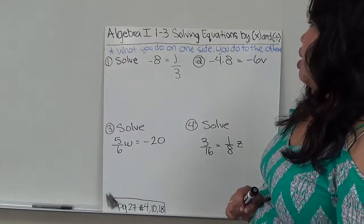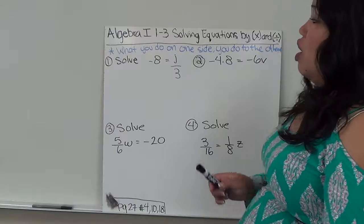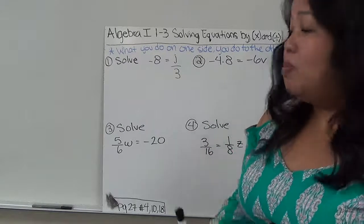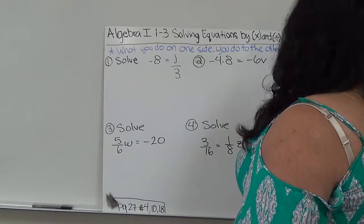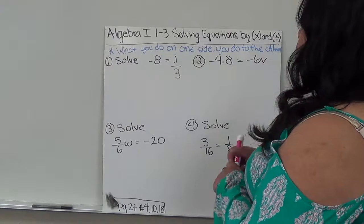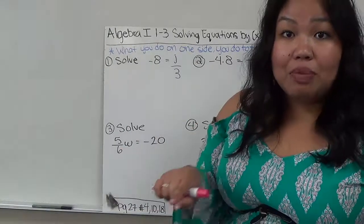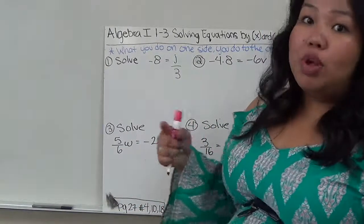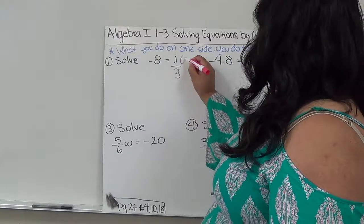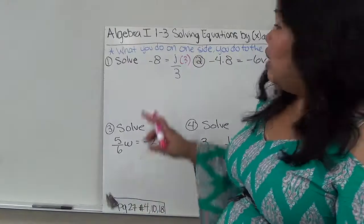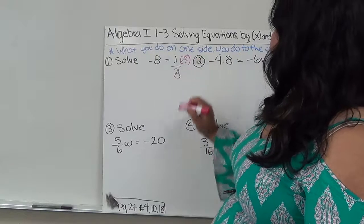Let's start with the first one. Negative 8 equals J over 3. We're focusing on the side with the variables. So in this case, this is our side with the variable. And right now it's being divided by 3. So the opposite of being divided by 3 is being multiplied by 3. Because 3 over 3 gives us 1, leaving us with just J, so this cancels out.